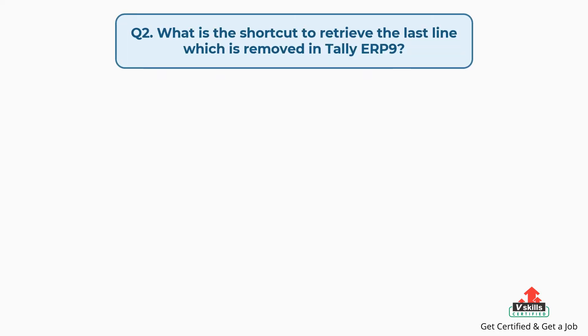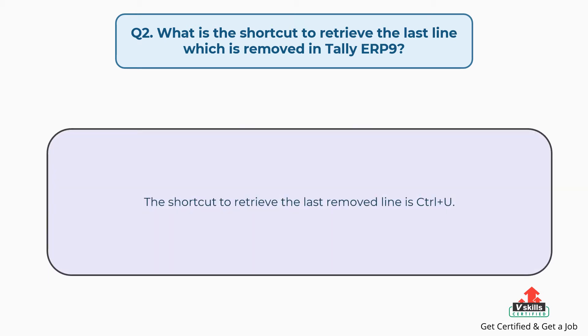Question number two: what is the shortcut to retrieve the last line which is removed in Tally ERP9? The shortcut to retrieve the last removed line is CTRL plus U.